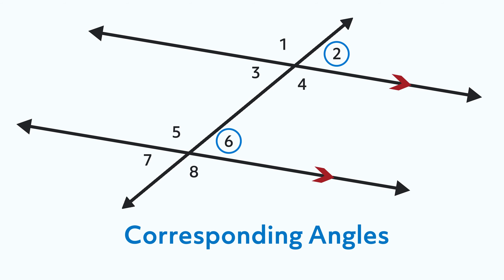So angles two and six are also corresponding angles, because they're in the top right spot for their respective groups. Angles three and seven are also corresponding, as are angles four and eight. In a transversal, when there's a pair of parallel lines, corresponding angles are congruent. When the lines are not parallel, the corresponding angles are not congruent.